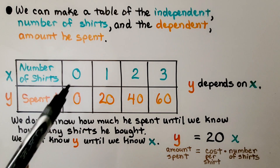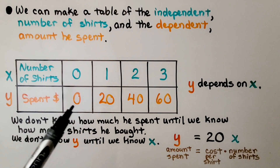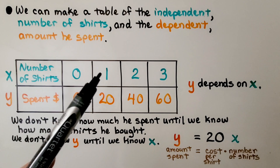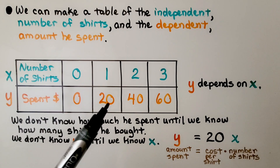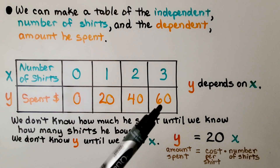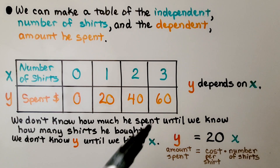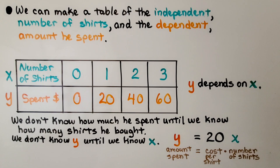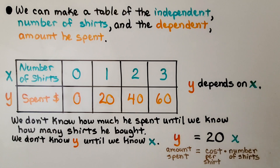If he buys zero shirts, he's going to spend $0. If he buys one shirt, he's going to spend $20. If he buys two shirts, he's going to spend $40. If he buys three, he's going to spend $60. We don't know how much he spent until we know how many shirts he bought — we don't know y until we know x. That is why the y variable is dependent on the x variable.